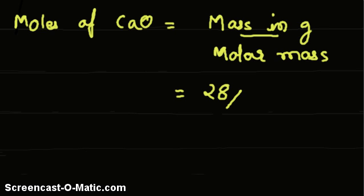The molar mass of calcium oxide is 56, which has been given. Therefore, the number of moles is 0.5.